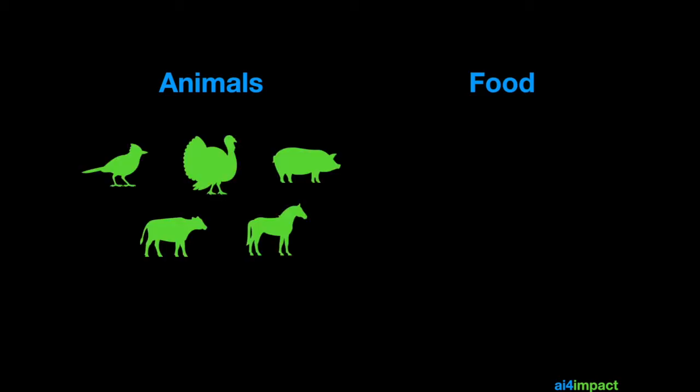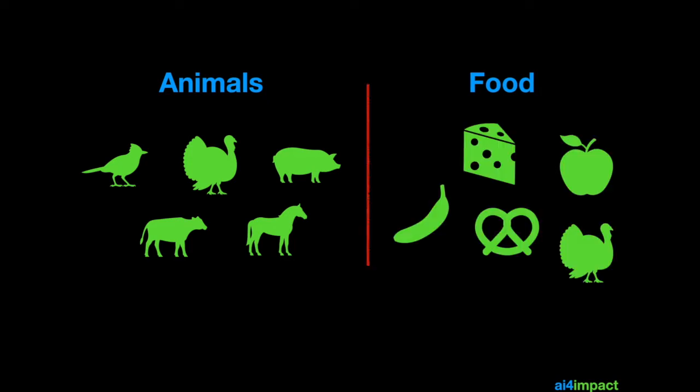Let me give you an example. Let's say I've got a type called animals and another type called food. I've got five things in my animals: a bird, a turkey, a pig and so on. And similarly for the food I could have cheese, an apple, banana, etc.